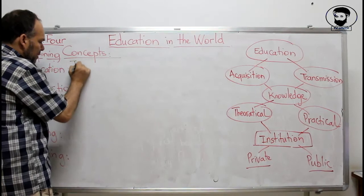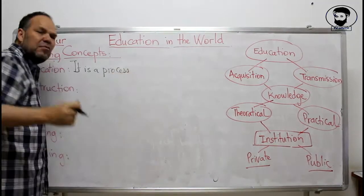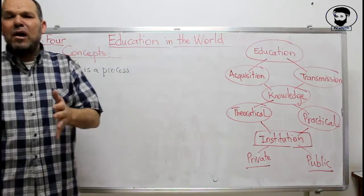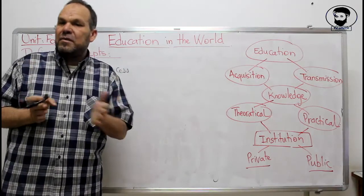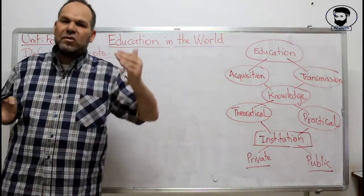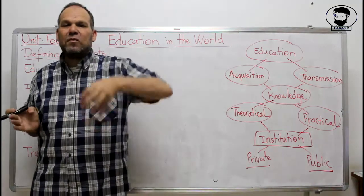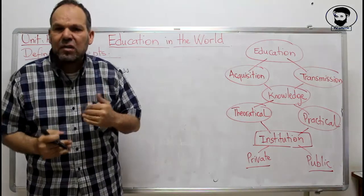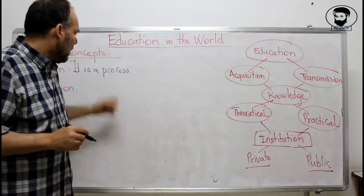Education is a process, because it doesn't happen in one or two days or years. For example, in Algeria, primary education is from age five to eleven — six years. Middle education is from eleven to sixteen — four years. Secondary education goes from sixteen to nineteen — three years. Then tertiary education, or university, goes from age nineteen onwards until you finish. So, it's a process.